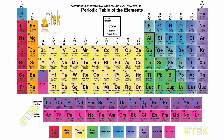These are all called the lanthanide series and these are called the actinide series. The color indicates the type of the element.